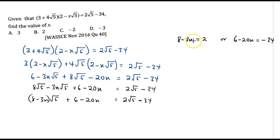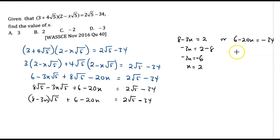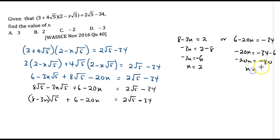So we either have 8 minus 3x equal to 2, or 6 minus 20x equal to negative 34. Solving the first: negative 3x equals 2 minus 8, so negative 3x equals negative 6, and dividing by negative 3 gives x equals 2. For the second: negative 20x equals negative 34 minus 6, which gives negative 40, and dividing by negative 20 also gives x equals 2. Either way you get the same solution. The value of x is 2, which is possible answer D.